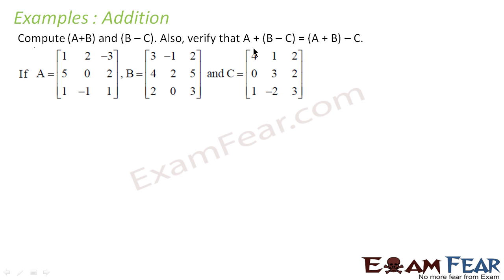Those were the four properties. Now let's take some examples. We have to compute A plus B and B minus C, and also verify that A plus B minus C is equal to A plus B minus C — essentially verifying the associative property. Let's first find A plus B.